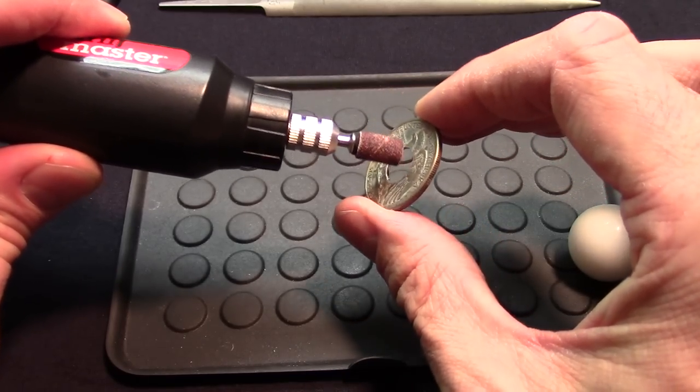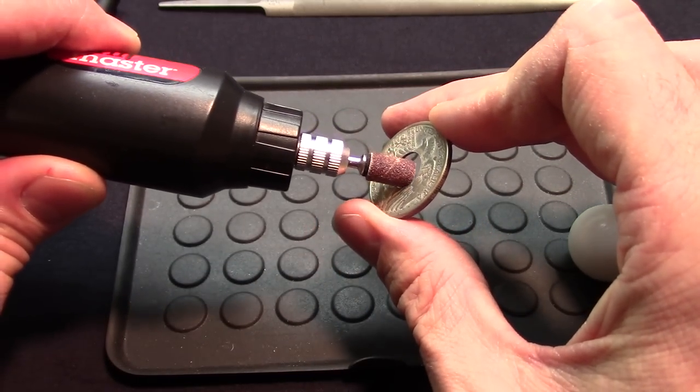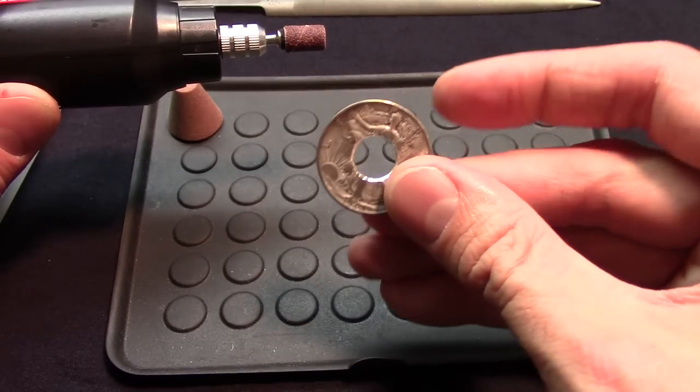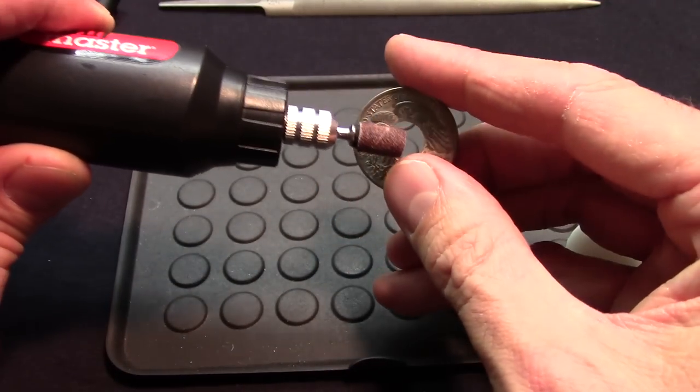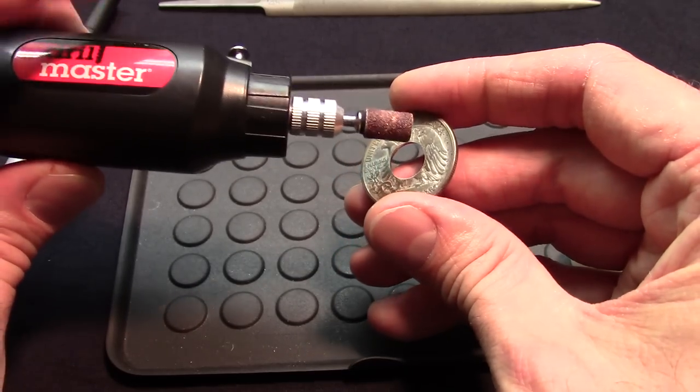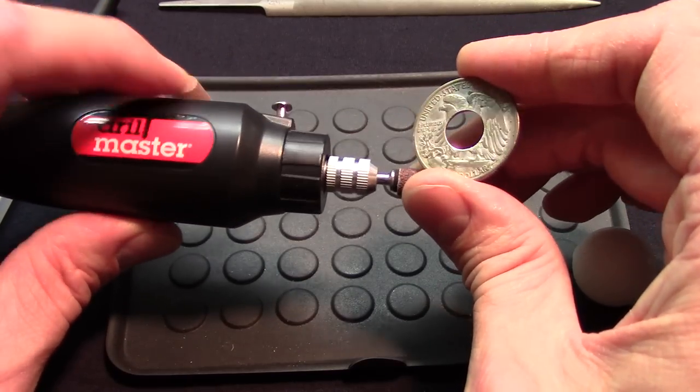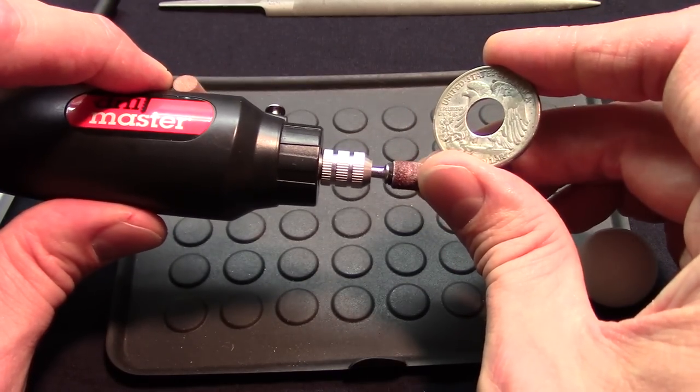Going around with a little tiny sanding drum. But when you're using silver coins, when you're making coin rings out of 90% silver, and unless you have a good method to trap the shavings, this method here really isn't so ideal.